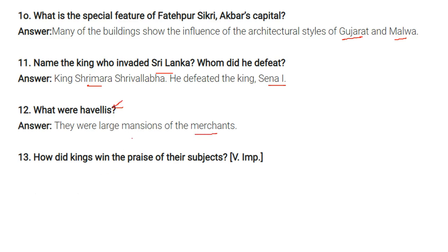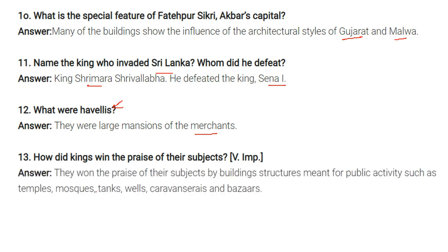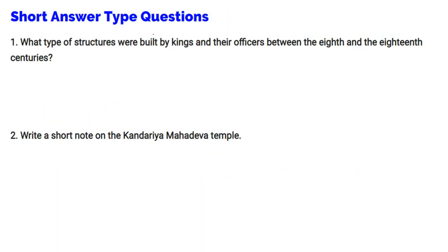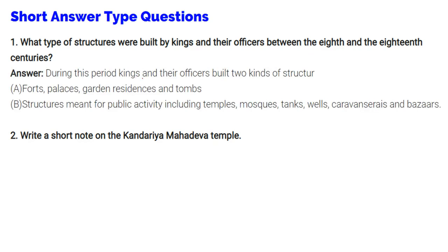Question: How did kings win the praise of their subjects? They won the praise of their subjects by building structures meant for public activities such as temples, mosques, tanks, wells, caravanserais, and bazaars. Question: What type of structures were built by kings and their officers between the 8th and 18th centuries? During this period, kings and their officers built two kinds of structures: first, forts, palaces, gardens, residences, and towns; and second, structures meant for public activity like temples, mosques, tanks, wells, caravanserais, and bazaars.